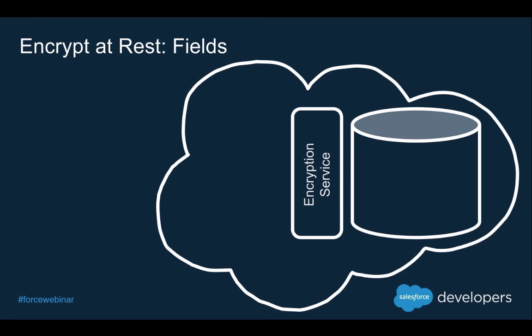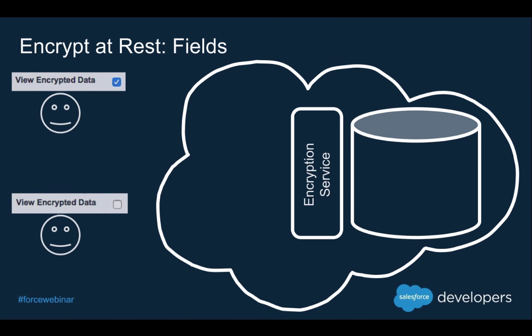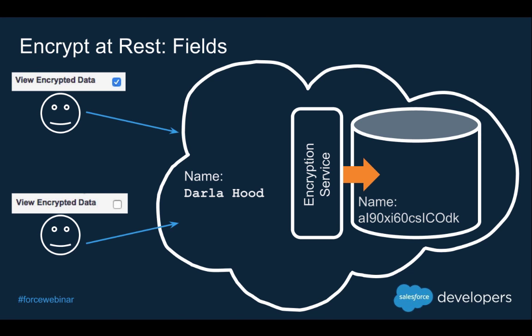What does it actually mean to encrypt at rest? The platform encryption service sits just above our actual database tier. Users who are adding data to the database — regardless of their view encrypted data setting — will be able to store data if they have field and object permissions. The encryption service takes that clear text data and encrypts it as it's passed into the database, and the reverse happens on retrieval. If a user doesn't have 'view encrypted data,' they'll see the text mask.